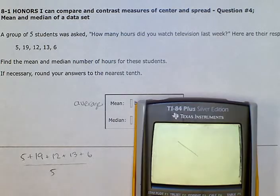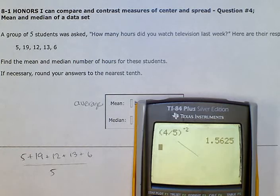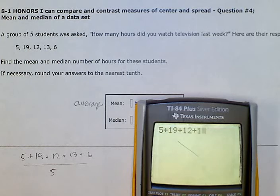Sorry, I had to grab my calculator. Let's clear. Okay, so we're going to do five plus 19 plus 12 plus 13 plus 6.